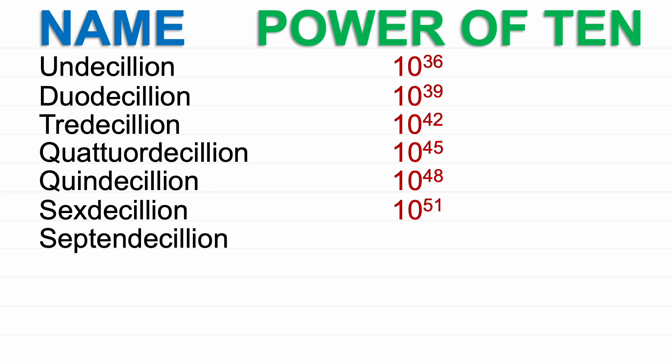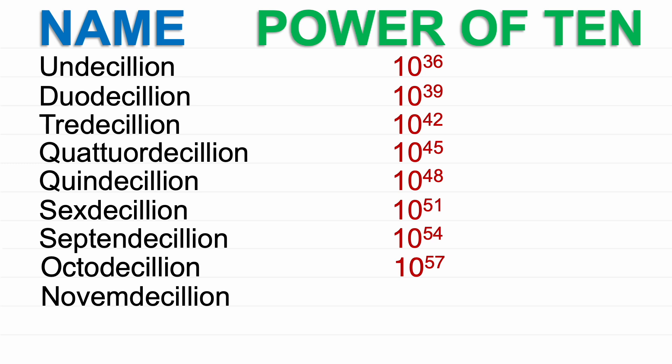Septendecillion: 10 to the power of 54. Octodecillion: 10 to the power of 57. Novemdecillion: 10 to the power of 60.